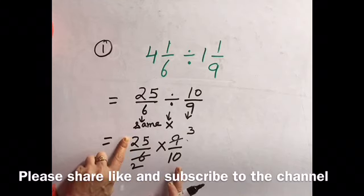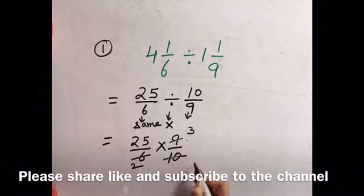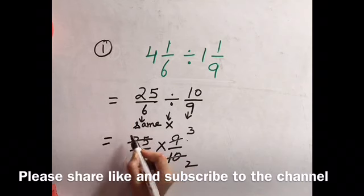Same, these two, 25 and 10, both are divided by 5. So 10 divided by 5 is 2 and 25 divided by 5 is 5.